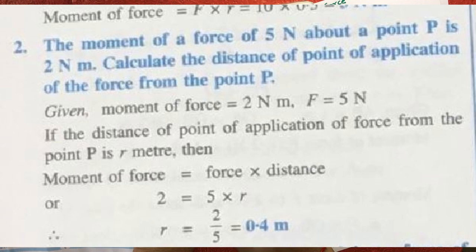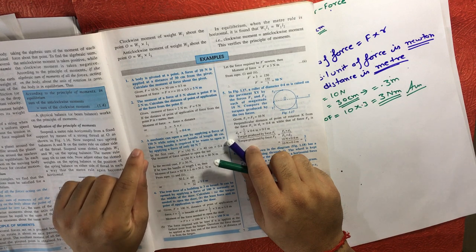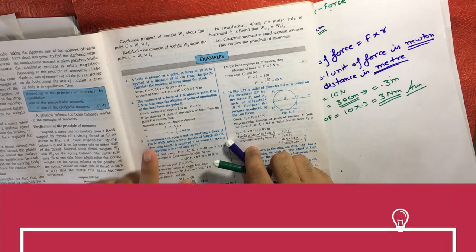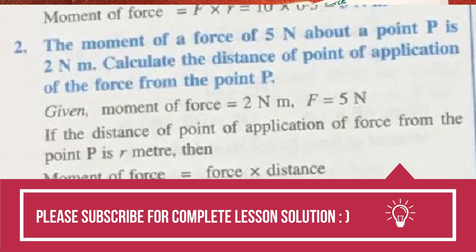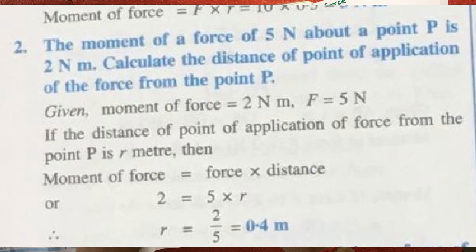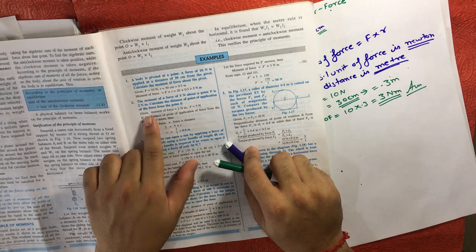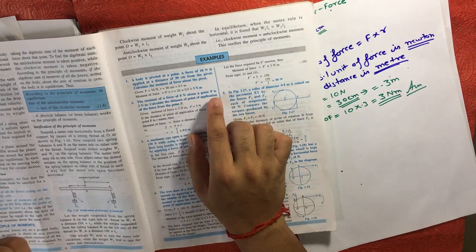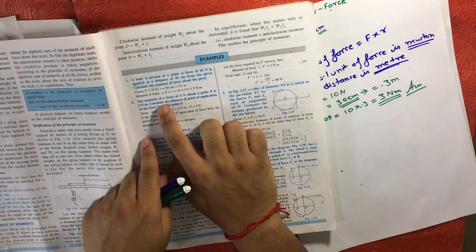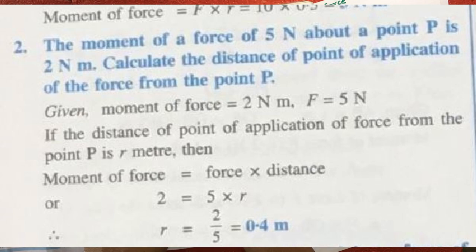Question number two says: the moment of a force of five newton about a point is two newton meter. The trick you need to understand is in reading this sentence carefully. If you read 'the moment of a force of five newton' as meaning the moment of force is five newton, you are wrong. Wherever 'of' is written and wherever 'is' is written — those are the keywords you need to focus on.